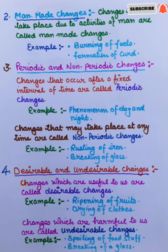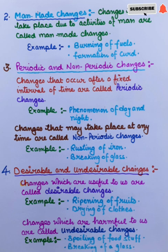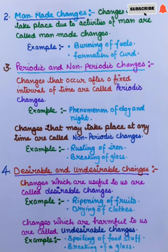Now the fourth change: desirable and undesirable changes. Desirable changes are those changes which are useful to us. For example, ripening of fruit, drying of clothes. Changes which are harmful to us are called undesirable changes. For example, spoiling of foodstuffs, breaking of glass — these are examples of undesirable changes.